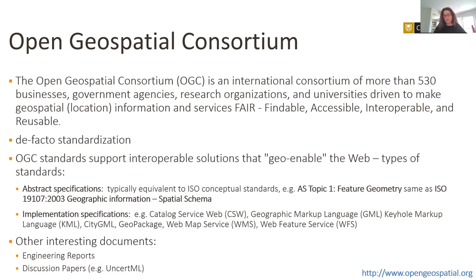FAIR wasn't a thing a few years back, and it wasn't at OGC either, but the organization is picking up the general approach to FAIR data science and has changed its mission to pay specific attention to that aspect as well. OGC standards have two main types: the Abstract Specification and Implementation Specifications. Because of the very close liaison between OGC and ISO, Abstract Specifications are typically equivalent to ISO conceptual schema.